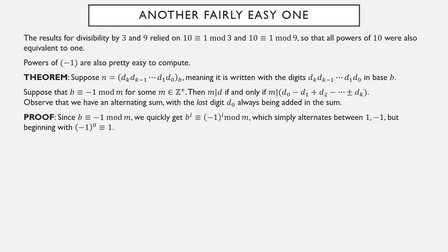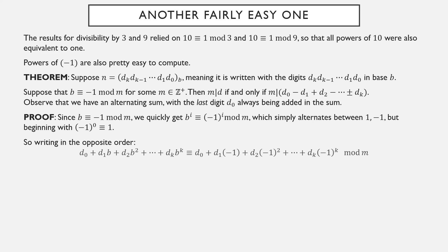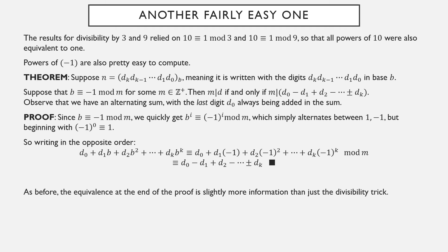The proof is straightforward. Since b ≡ −1 mod m, powers of b are equivalent to powers of −1, which alternate between 1 and −1. Writing n in base b, we can replace each power of b with the corresponding power of −1, giving the alternating sum of the digits. Since n is equivalent to this alternating sum modulo m, the remainder under division by m for the original number equals the remainder of the alternating digit sum. This isn't just a divisibility trick — it gives the remainder under division by 11.